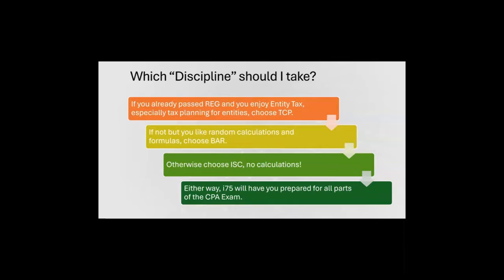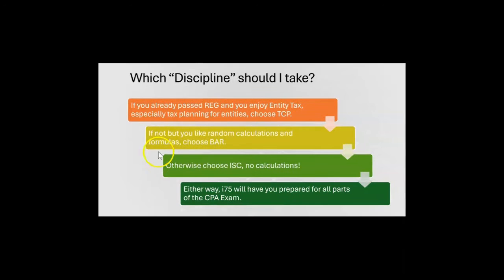especially tax planning for entities, choose TCP. If not, but you already passed FAR and you like random calculations and formulas, then choose BAR — Business Analysis and Reporting. Otherwise, choose ISC — Information Systems and Controls — no calculations at all.